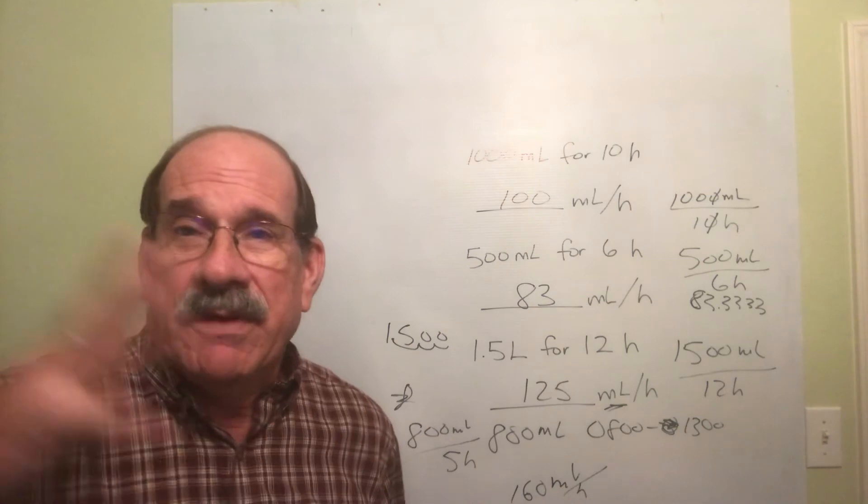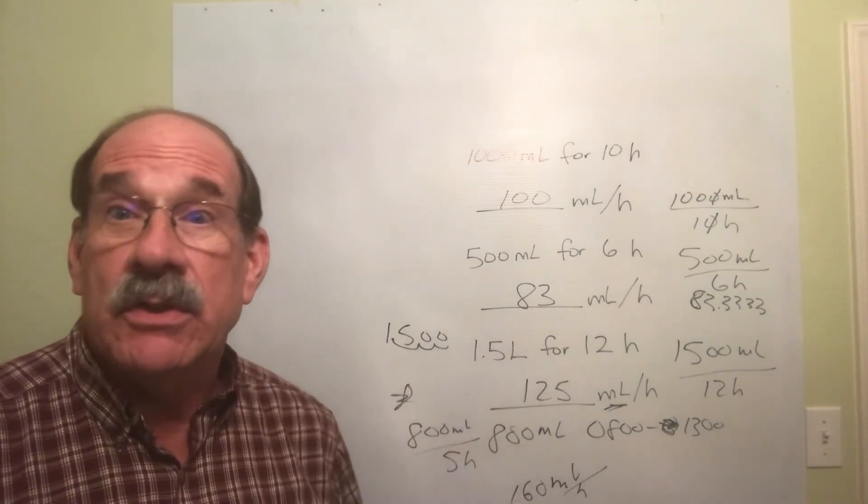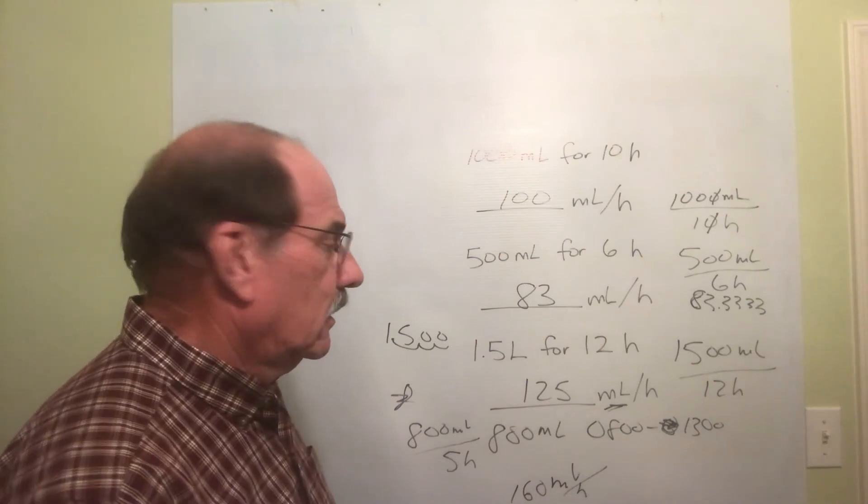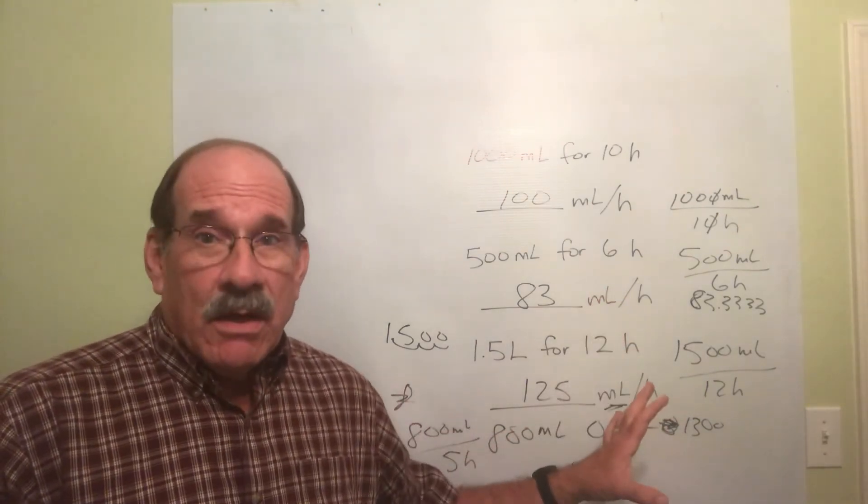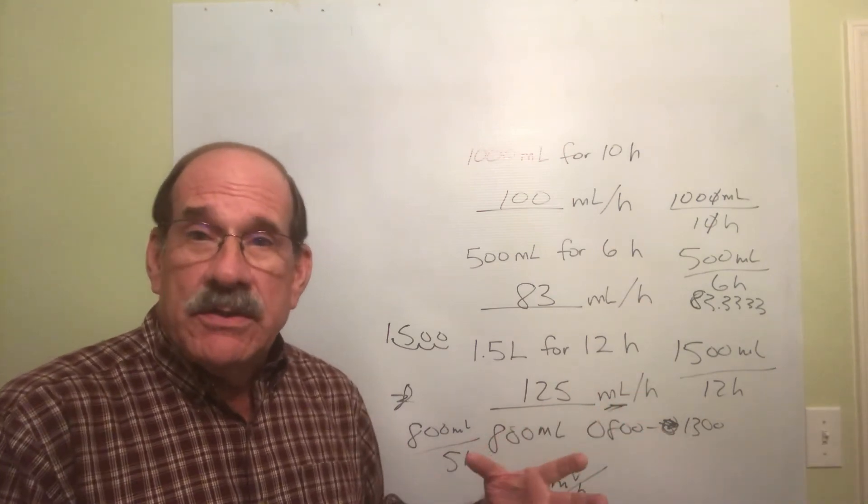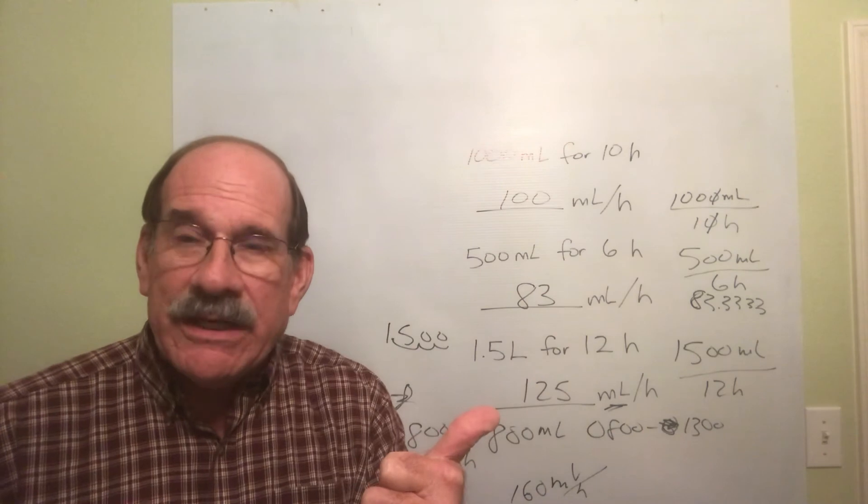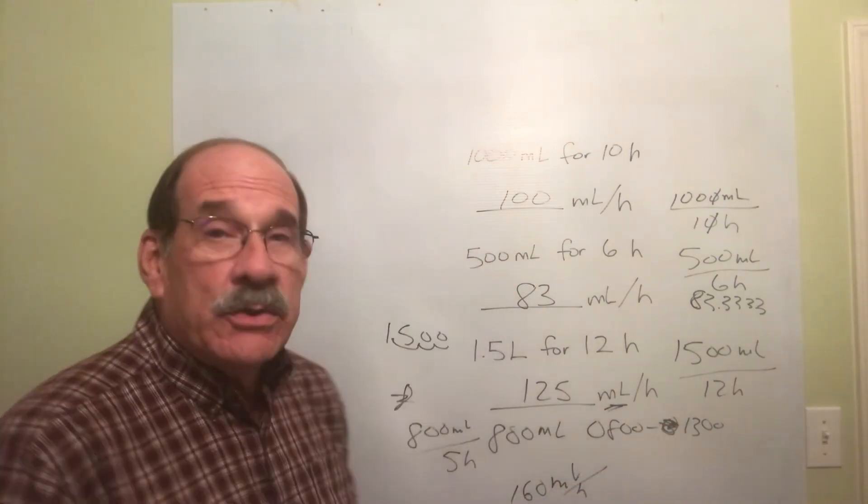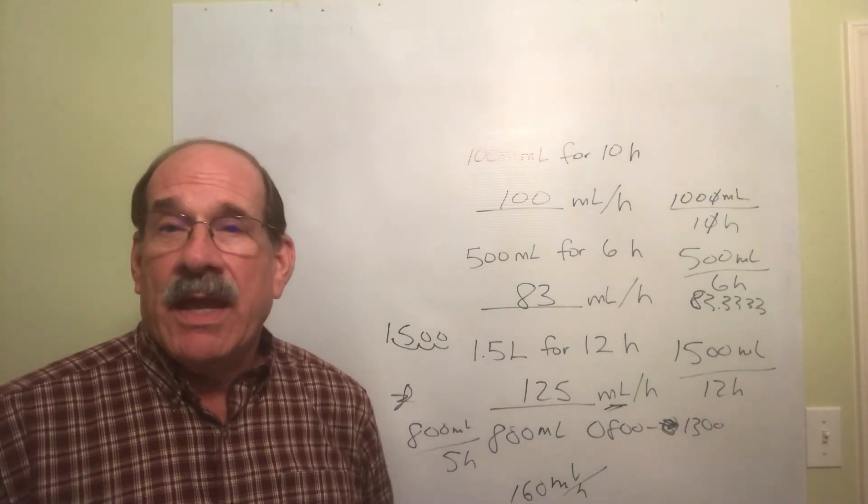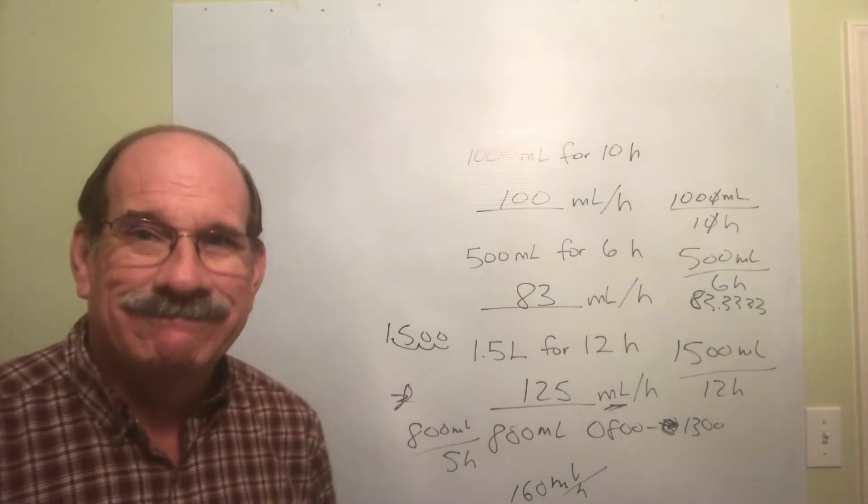I'm not sure I can stop looking stupid. Okay, so we got a lot more to go - a lot of variations of this. But all you do is you take the number of milliliters, you divide by the number of hours in which you're giving it, and that's what you do anytime and every time you have a machine with which to give your IV fluid.